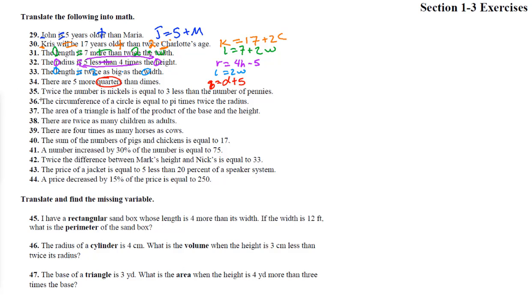Number 35: twice the number of nickels, that's 2N, is equal to three less than the number of pennies. Remember the three has to go over there, so the number of pennies minus three equals 2N: P − 3 = 2N.